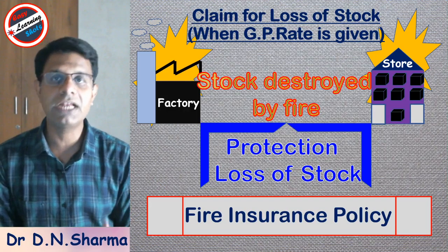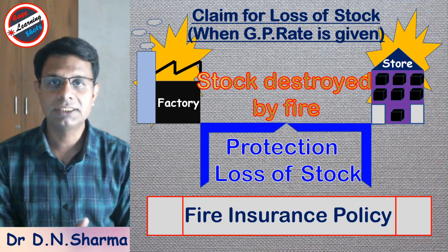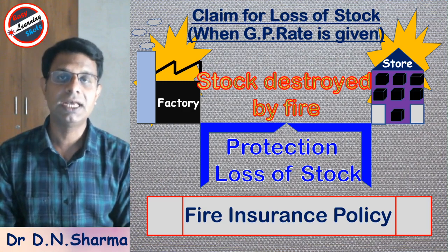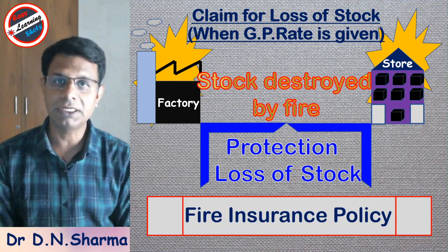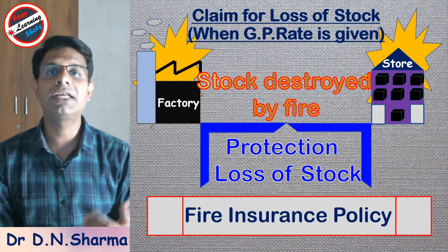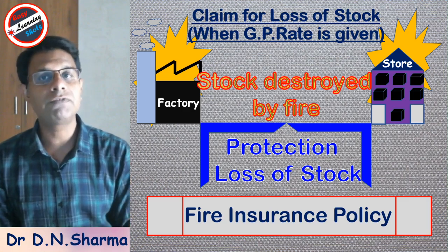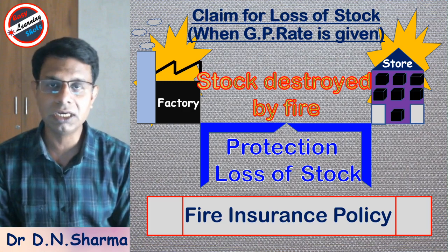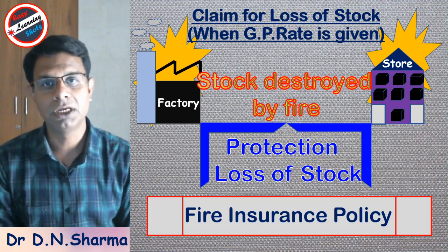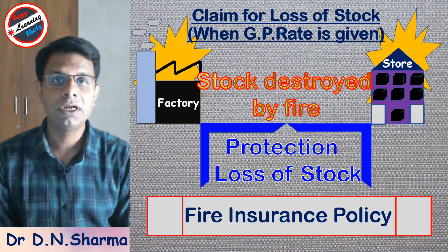When a fire breaks out in any factory, store, or shop, along with the stock, fixed assets are also damaged such as plant, machinery, and furniture. In case of fixed assets, when the insurance company does the insurance, they record them at original cost or purchase price, and after deducting depreciation from the date of purchase to the date of fire, the company gets the claim. But in case of loss of stock, the problem arises because the value and quantity of stock keeps on changing, and the stock keeps on moving from store to shop or from store to the production department. So it is very difficult to calculate the actual value of stock which was present at the date of fire.